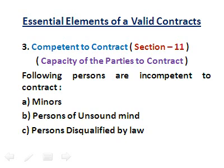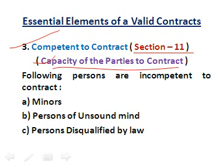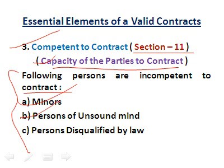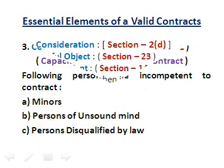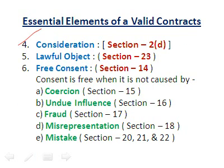Third is competent to contract under Section 11 — the parties must have the capacity to contract: they should be of majority age, of sound mind, and not disqualified by law. Persons incompetent to contract include minors, persons of unsound mind, and persons disqualified by law. Fourth is consideration, defined in Section 2D. Lawful object is covered under Section 23.